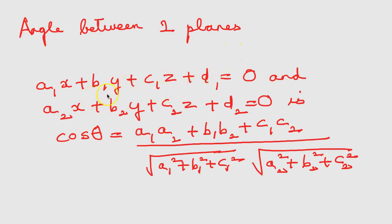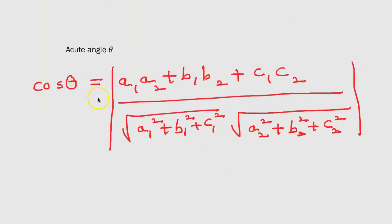Angle between two planes: given two planes, the angle between them is given by cos θ = (a₁a₂ + b₁b₂ + c₁c₂) divided by (√(a₁² + b₁² + c₁²) × √(a₂² + b₂² + c₂²)). The acute angle θ is given by the same formula but with a modulus sign: cos θ = |a₁a₂ + b₁b₂ + c₁c₂| divided by (√(a₁² + b₁² + c₁²) × √(a₂² + b₂² + c₂²)).